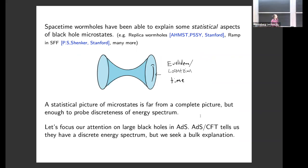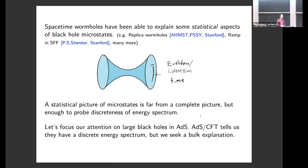As brief background: spacetime wormholes have been used recently to explain many aspects of black holes, and in particular they've been able to explain some things related to statistical aspects of black hole microstates. While a statistical picture of black microstates is far from complete, these wormholes seem to be enough to probe questions related to the discreteness of the energy spectrum of the black hole. Let's focus on large black holes in AdS.